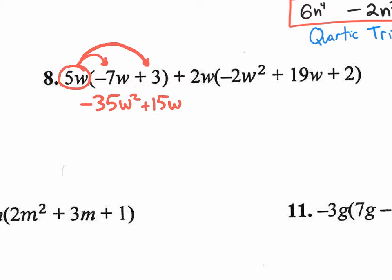And then I'm going to circle the positive 2w and multiply it by negative 2w squared. So when I go 2 times negative 2, I will get negative 4. But then when I go w times w squared, that will change it to a w to the third. I've distributed to the first term.